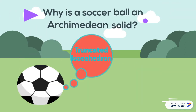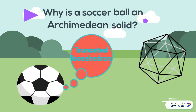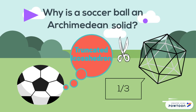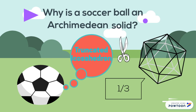The reason a soccer ball, or truncated icosahedron, is an Archimedean solid is because it is an altered icosahedron. If a third of each edge was cut off the original shape, it would become a truncated icosahedron — or a soccer ball — as 'truncated' means 'cut off'.